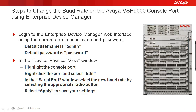In the Device Physical View window, we'll highlight the console port, then we'll right-click the port and select Edit. In the Serial Port window, we'll select the new baud rate by selecting the appropriate radio button. Finally, we'll select Apply to save our settings.